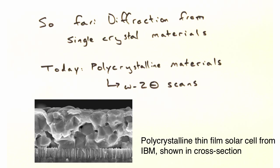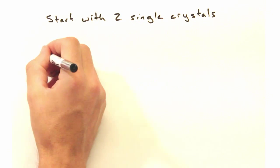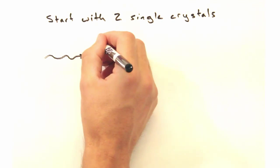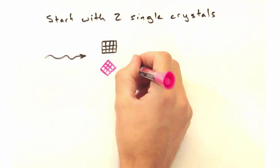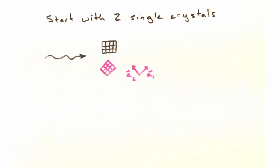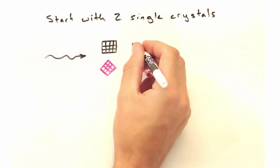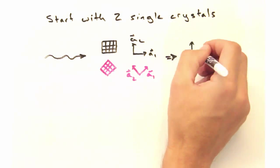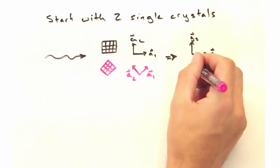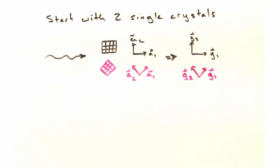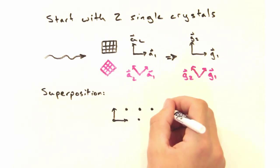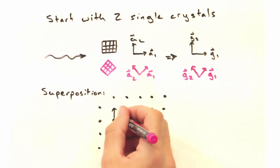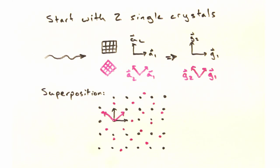Before considering thousands of individual grains, let's start with two single crystals that are both illuminated by the source beam. Because an incoming wave interacts with each crystal at the same time, we can treat the reciprocal lattice as a superposition of each grain's individual reciprocal lattices.